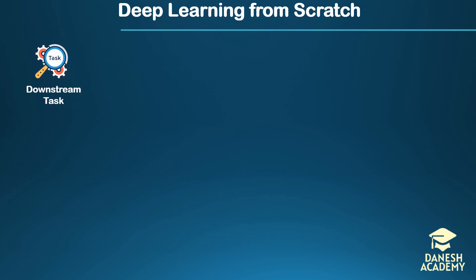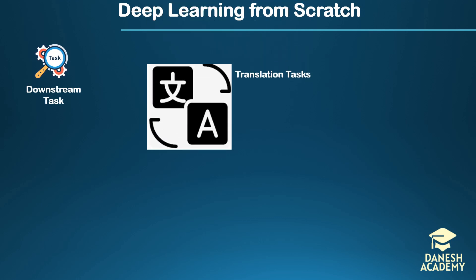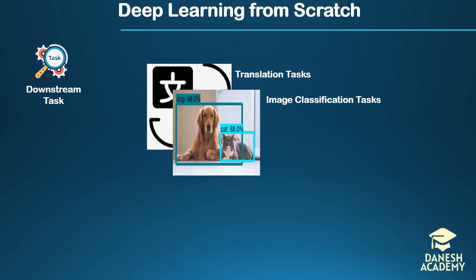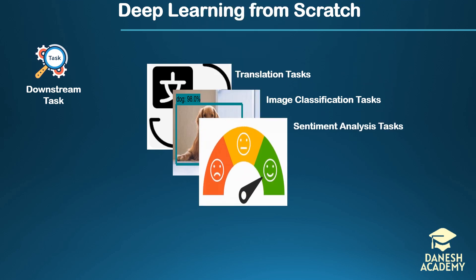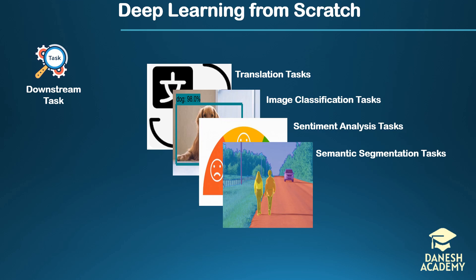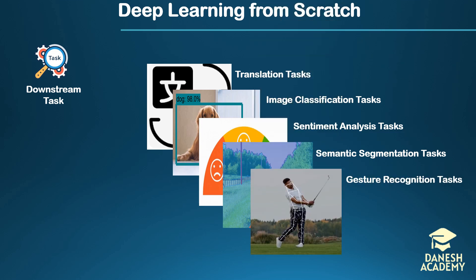Let's break it down. Back in the day, natural language processing wizards wanted to do translation, which was considered a very laborious task. In computer vision, image classification — sorting pictures into neat categories, like a digital librarian organizing a massive photo album — was an established task. Sentiment analysis was crucial for online stores wanting to decode if their customers were satisfied or frustrated. Semantic segmentation was paramount for the autonomous driving industry. And gesture recognition is what future smart homes require to provide better services.